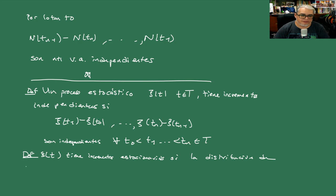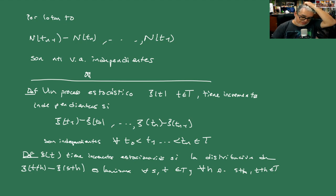Y vamos a decir que ξ tiene incrementos estacionarios si la distribución de ξ en T más H menos ξ en S más H es la misma para todo S y T en T y para toda H tal que S más H y T más H siguen estando en T. Entonces el teorema anterior lo podemos frasear como que los procesos de Poisson tienen incrementos estacionarios e independientes.